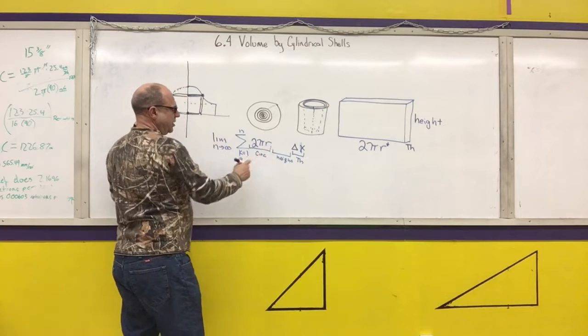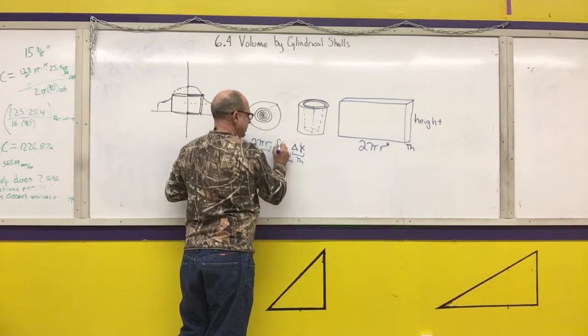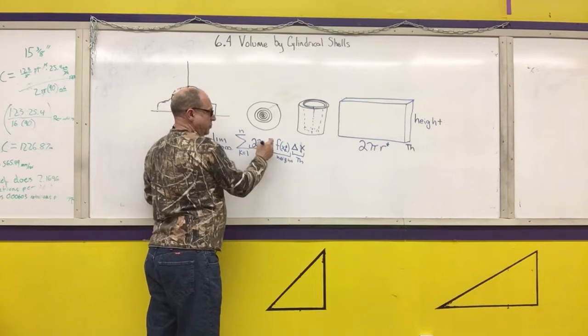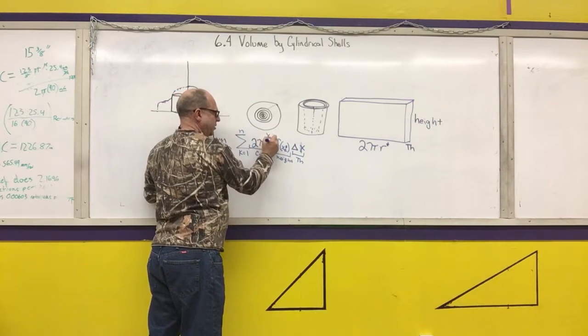And if I'm doing it in terms of x, it would be f of x, sub k star. This r, if I'm doing it in terms of x, would be x sub k star.